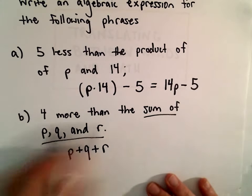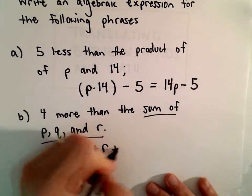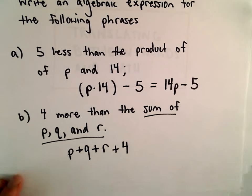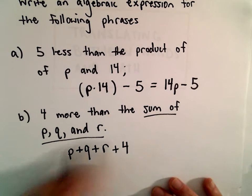But we have to get something 4 more than that. So we would add an additional 4 units onto that expression. We would end up with P plus Q plus R plus 4.